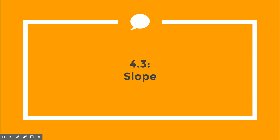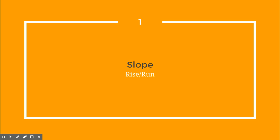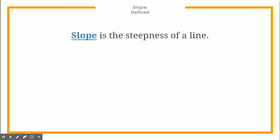Hi students, in this video we are going to be going over slope. Our essential question for today is: how is the slope of a line found? First, let's go over slope — what's its definition and what does that look like on a graph? The definition of slope is that it is the steepness of a line.